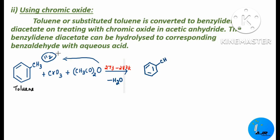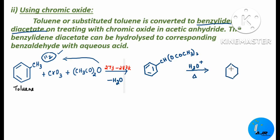The product formed is benzaldehyde diacetate: the CH group with OCOCH3 on both sides. This is called benzoyl diacetate. This intermediate undergoes hydrolysis with aqueous acid at high temperature, and we finally get benzaldehyde. So using chromic oxide, toluene is converted to benzaldehyde diacetate in the presence of acetic anhydride and chromic oxide at 273 to 283 K, and further hydrolysis of this intermediate gives benzaldehyde.